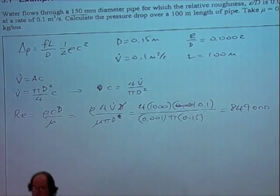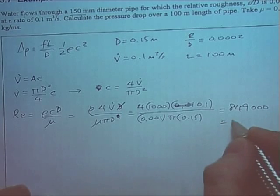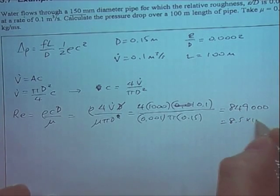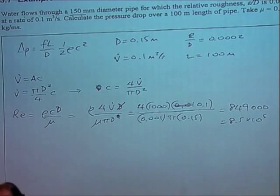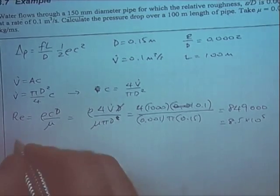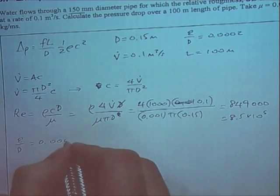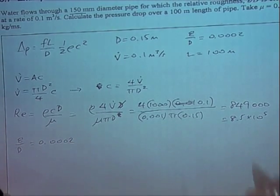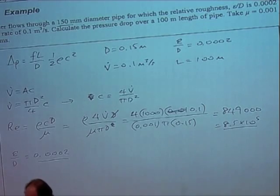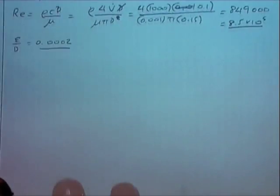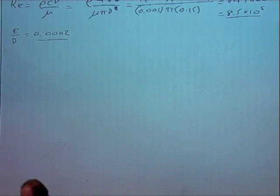So that's obviously going to be 8.5 times 10 to the 5. Now, our relative roughness has been given to us as 0.0002. So using this value and this value, we can go to our Moody chart, which is on page 23. We've got a large version of the Moody chart for you to use. If you want to print it out big, you can do so.